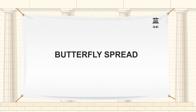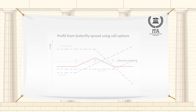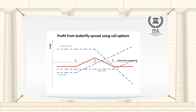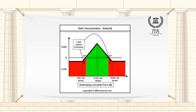A butterfly strategy involves four options with three strike prices. For a call strategy, an investor can buy one call at the lowest price, sell two calls at the middle strike price, and buy one call at the highest strike price.